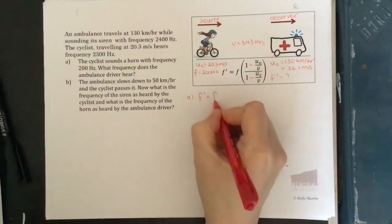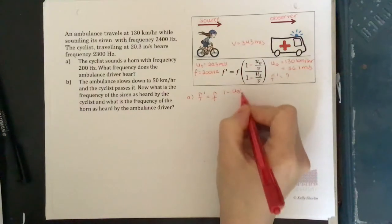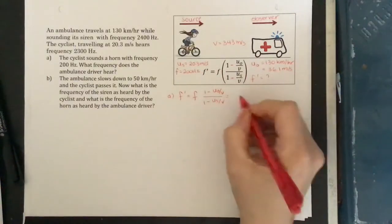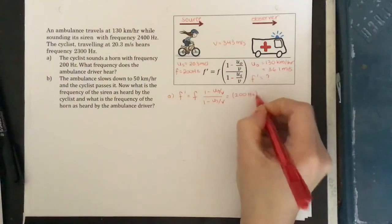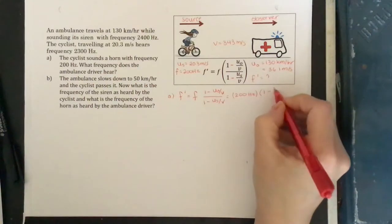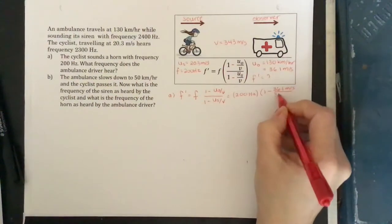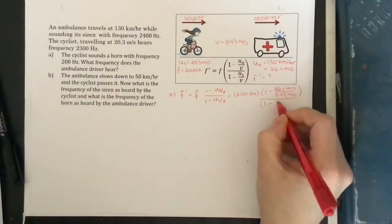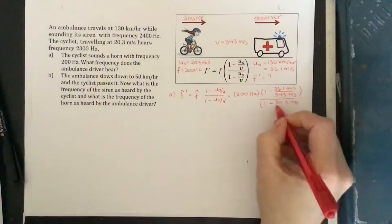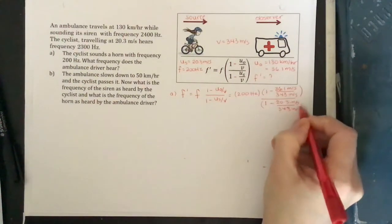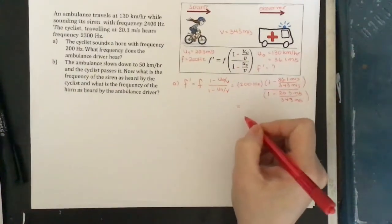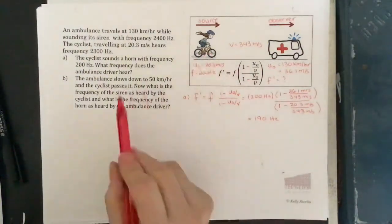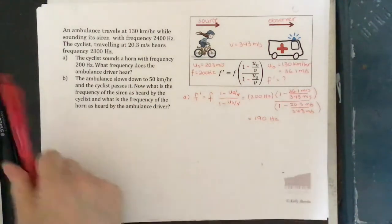For part A, the frequency heard by the ambulance driver equals the cyclist's frequency of 200 hertz, times 1 minus u₀ over v, divided by 1 minus uₛ over v. Plugging in: 200 hertz times (1 minus 36.1 divided by 343), divided by (1 minus 20.3 divided by 343). Running that through the calculator gives a frequency of 190 hertz. So if the cyclist sounds her horn, the ambulance driver will hear a lower frequency of 190 hertz.